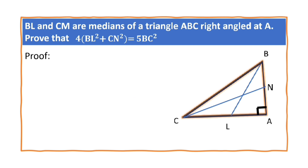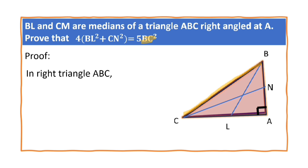Now let us prove. Here we want BL, CN and BC — this is BL, this is CN, this is BC. All are the hypotenuse of some right angled triangle. Let us concentrate on BC. BC is the hypotenuse of right angled triangle ABC. So BC square is equal to AB square plus AC square, because of Pythagoras theorem. Let this be equation number 1.